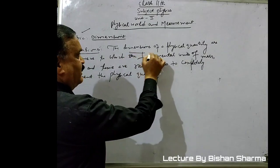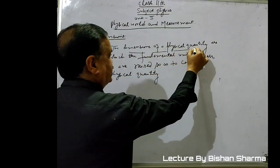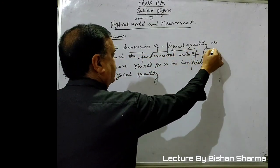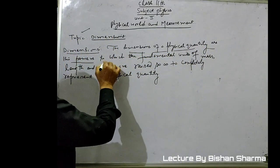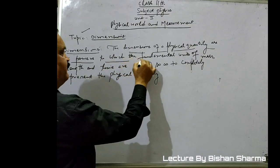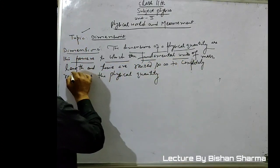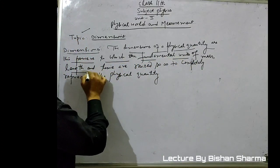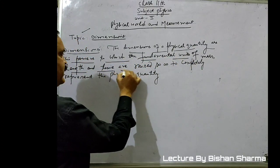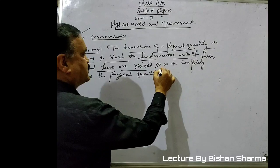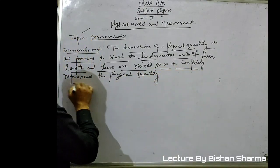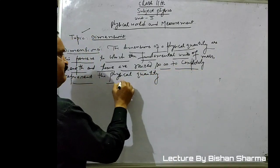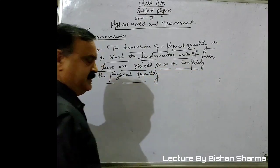Dimensions of a physical quantity are the powers to which the fundamental units of mass, length, and time are raised so as to completely represent the physical quantity.